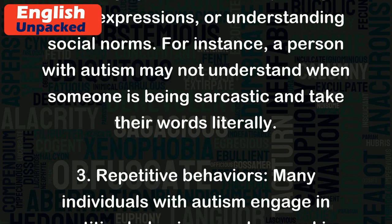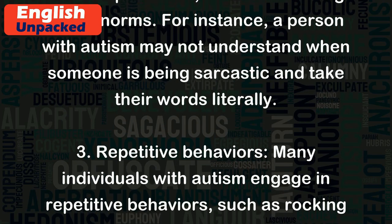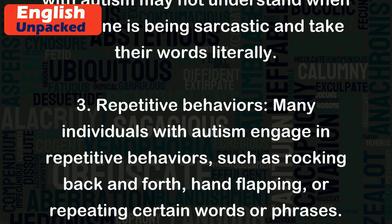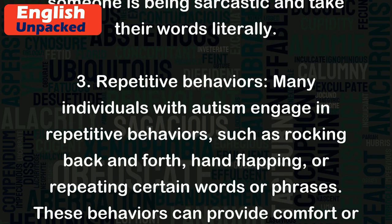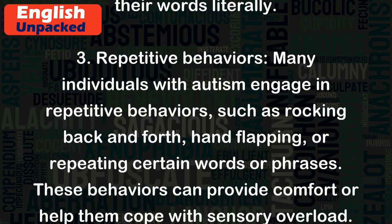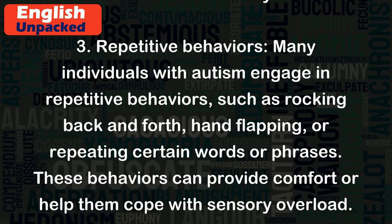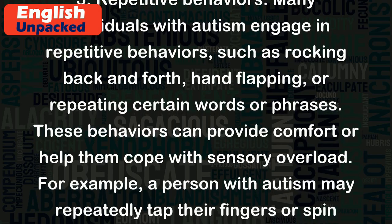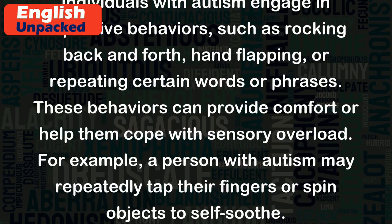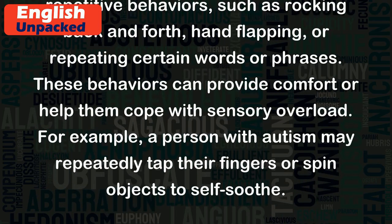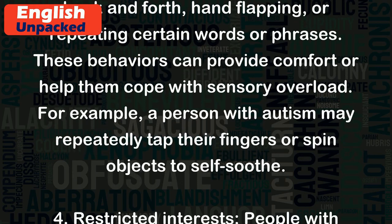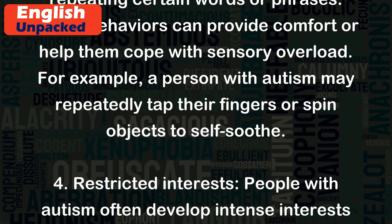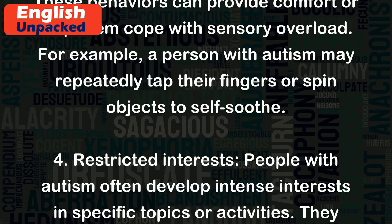3. Repetitive Behaviors. Many individuals with autism engage in repetitive behaviors, such as rocking back and forth, hand flapping, or repeating certain words or phrases. These behaviors can provide comfort or help them cope with sensory overload. For example, a person with autism may repeatedly tap their fingers or spin objects to self-soothe.